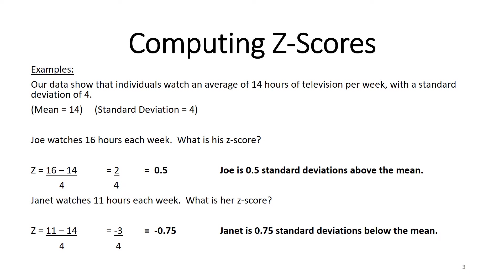Let's move on to our second person: Janet. Janet watches 11 hours each week. We take her raw value of 11 and place it into the formula: 11 minus the mean of 14 divided by a standard deviation of 4. For Janet, we get a z-score of negative 0.75. That tells us Janet is 0.75 standard deviations below the mean. That's how we compute z-scores and do a basic interpretation of them.